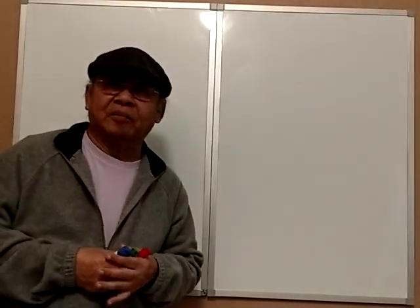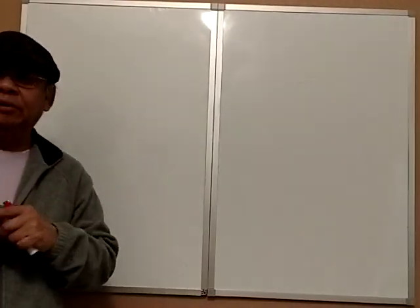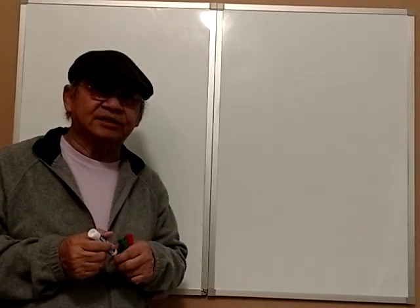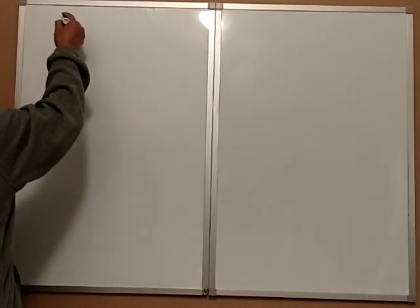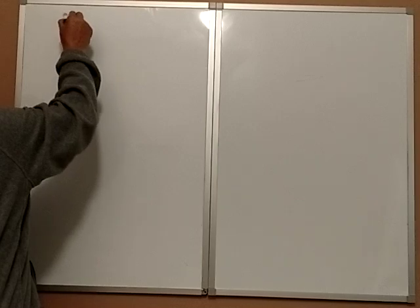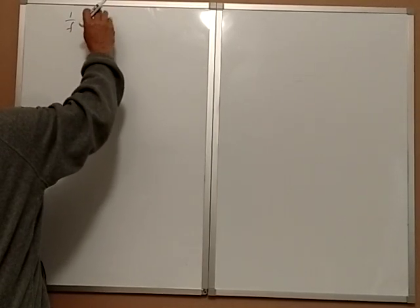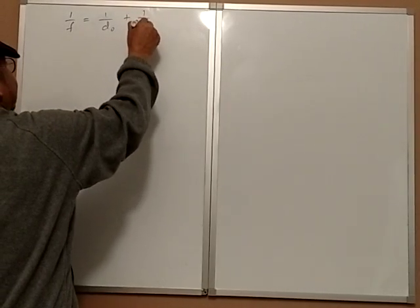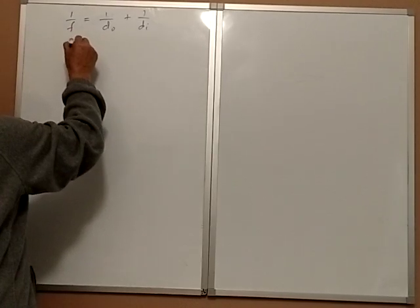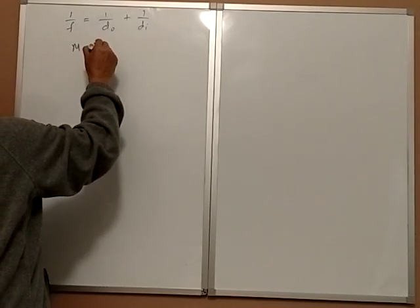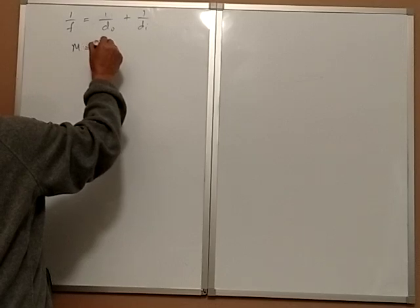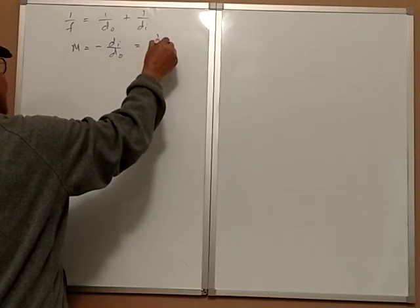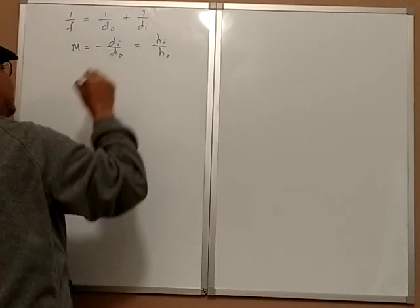Hey guys, today we are going to talk about mirrors. So there are only two things different from lenses. The formulas are the same: 1/f = 1/d0 + 1/di. The magnification M equals minus di by d0, and it's also equal to hi by ho — the height of the image over the height of the object.